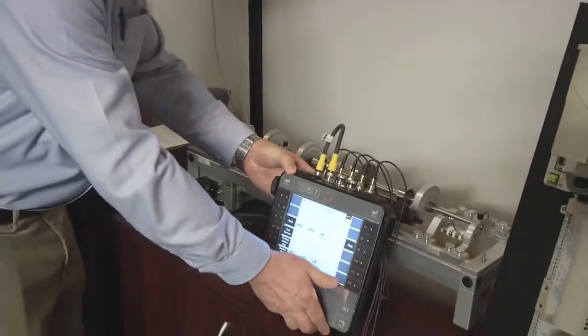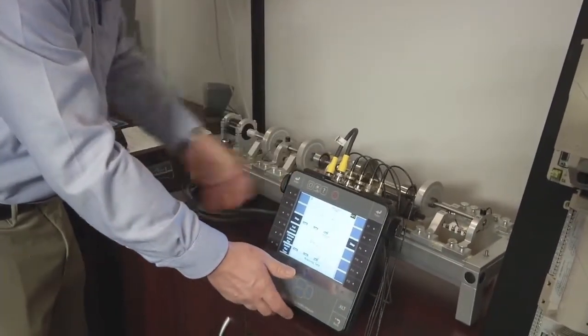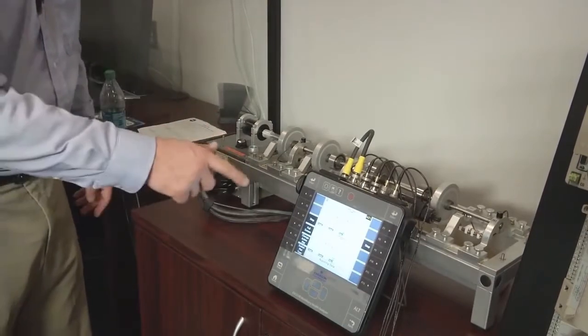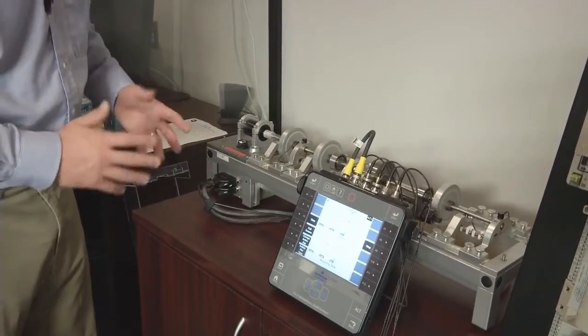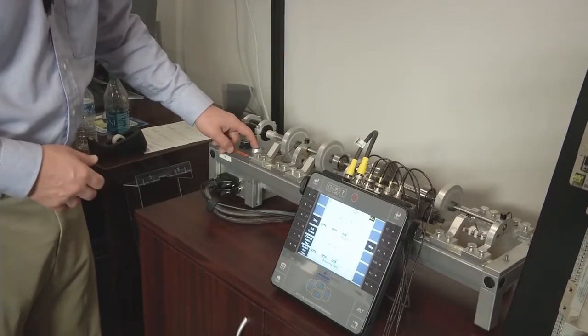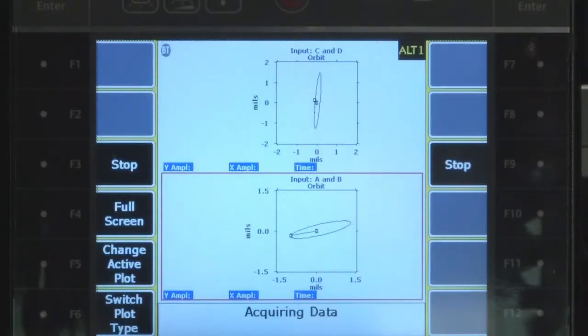I'm going to set this 2140 down here on the stand and just demonstrate these live orbits, how they will change in shape just by killing the power to this rotor. So it's coasting down now and you can see the shapes are decreasing with the speed. As I add the power back, you can see they come right back to where they were previously.